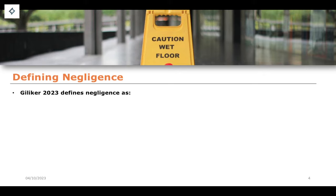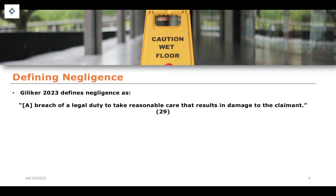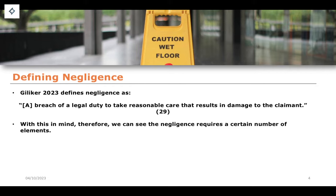A useful definition can be found in Giliker from 2023, and also from previous editions. Giliker defines negligence as a breach of a legal duty to take reasonable care that results in damage to the claimant. That is what is defined as negligence, and it's a particularly nice definition. What this definition does is give us what negligence is and allows us to unpack the various different elements which are required to show and to have a successful negligence claim.